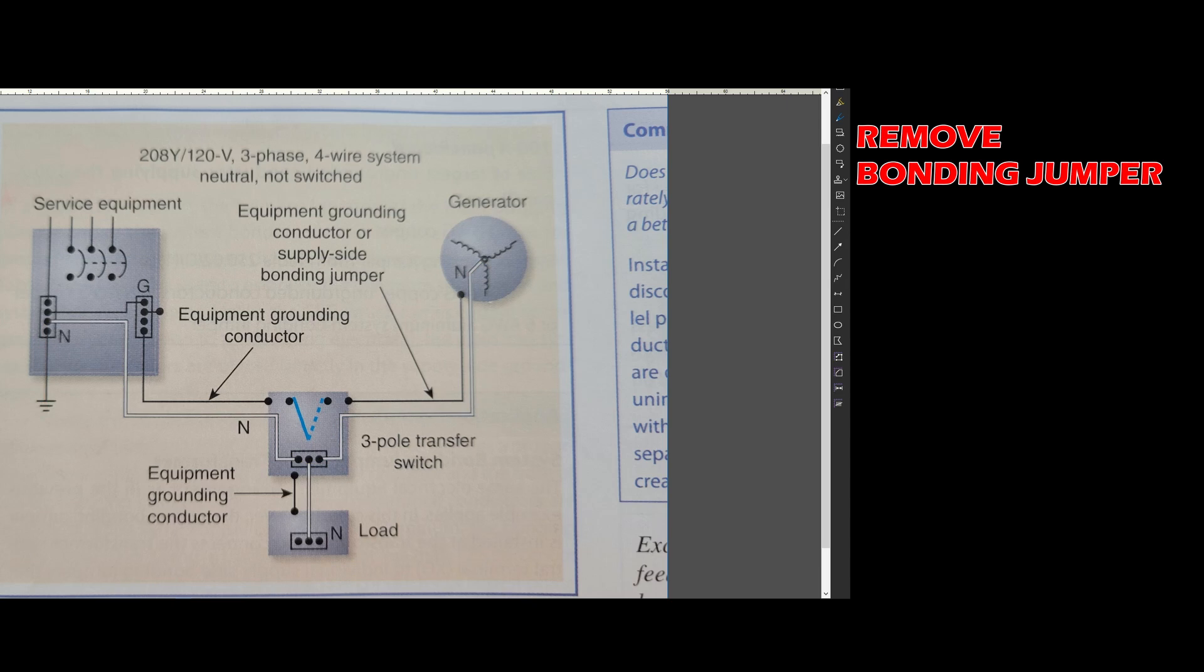The continuous neutral allows you to use your existing grounding electrode here. So no additional ground rod is required by code, as shown in this exhibit.